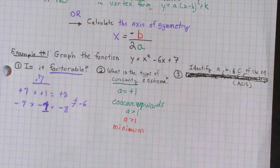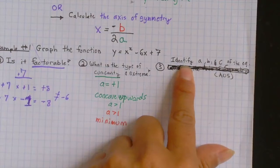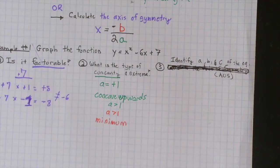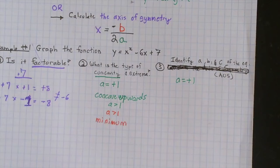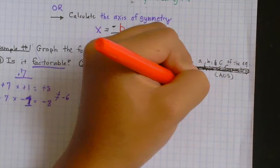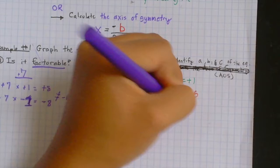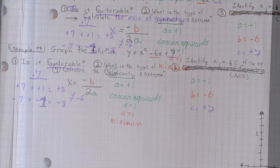Once we have identified those two features, we're going to identify a, b, and c of the equation y equals x squared minus 6x plus 7. We already know that a equals 1, positive 1, b equals negative 6, and c equals positive 7. Make sure you have all this in your notes. So, now, step 4, calculate the axis of symmetry. We do this by substituting the values in for the variables.